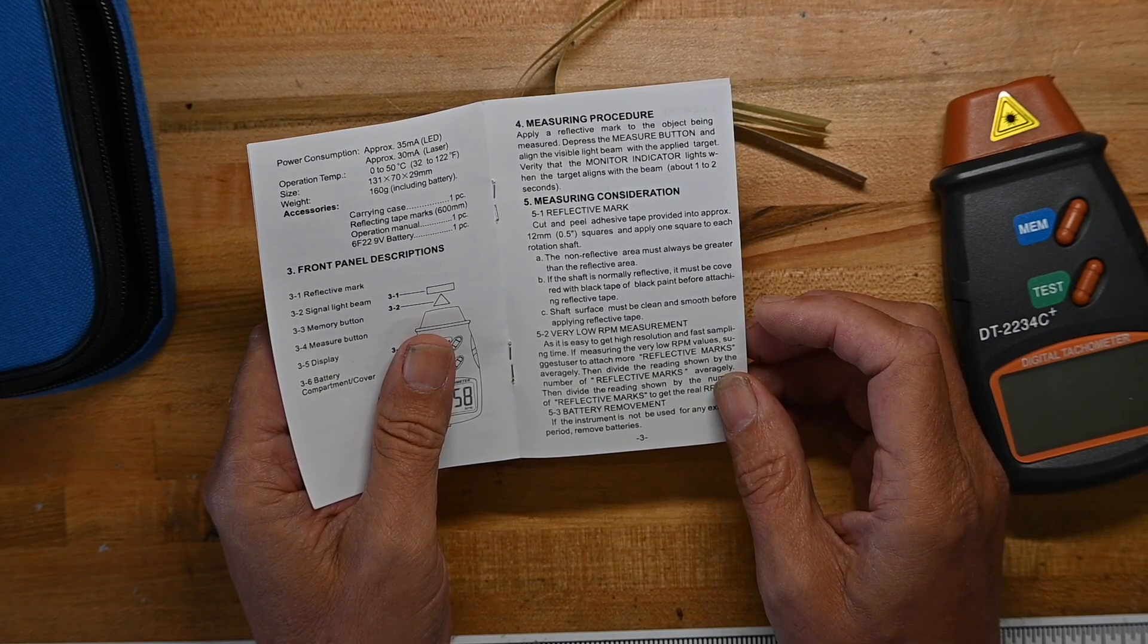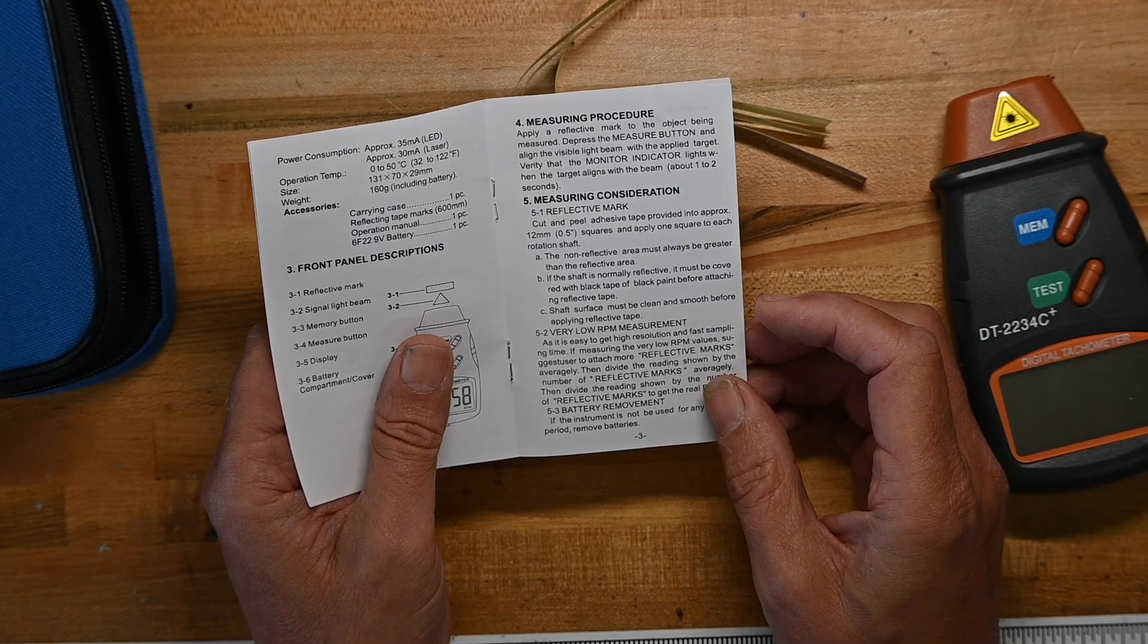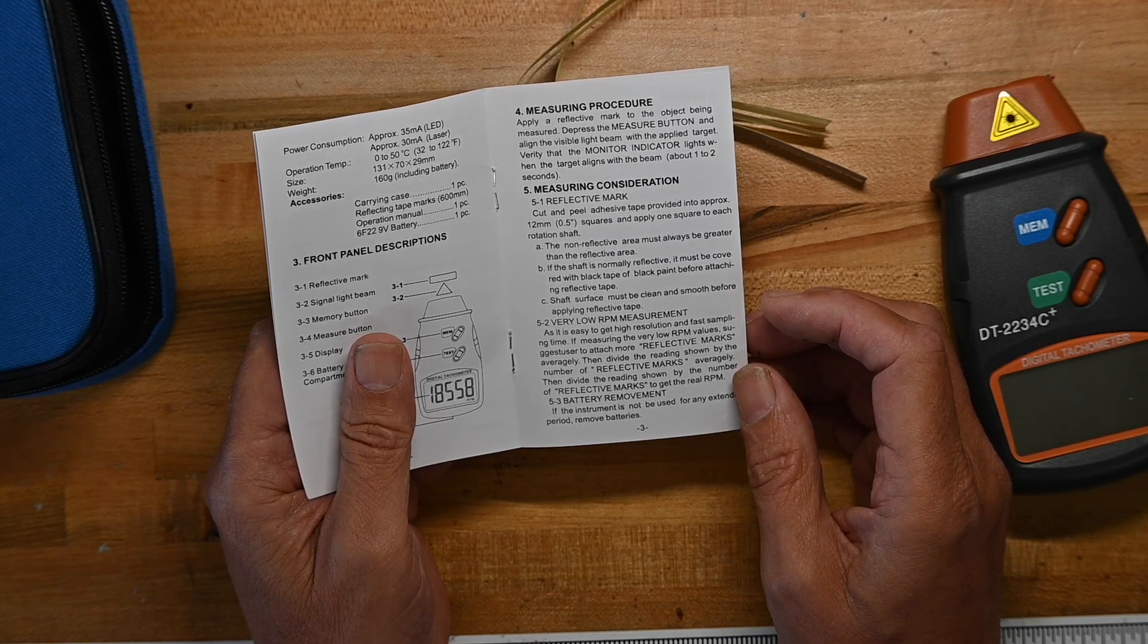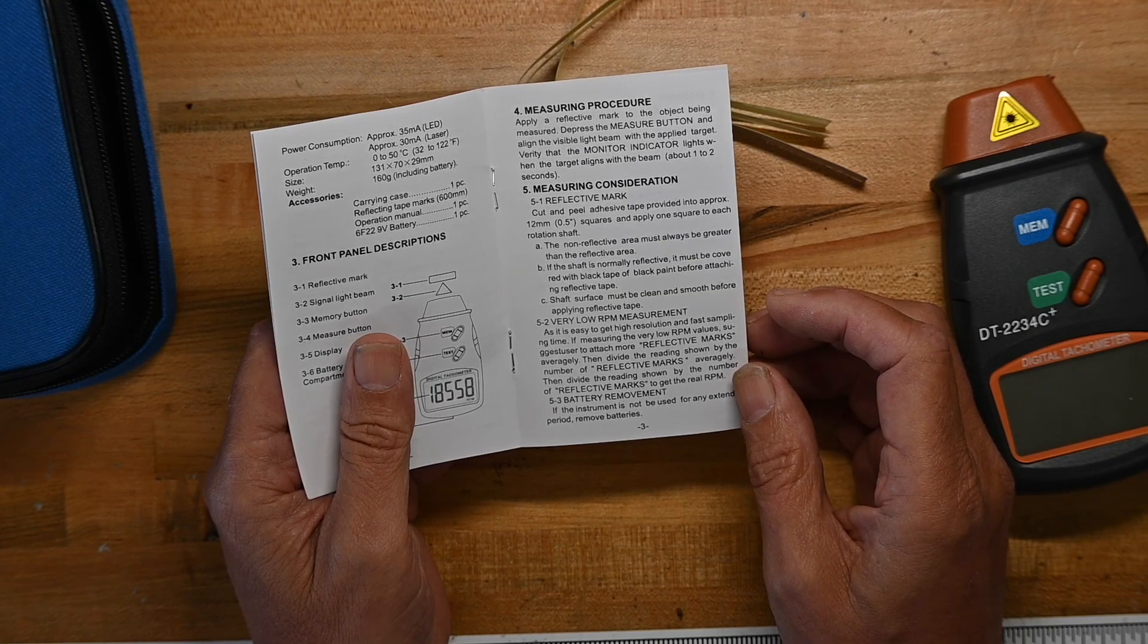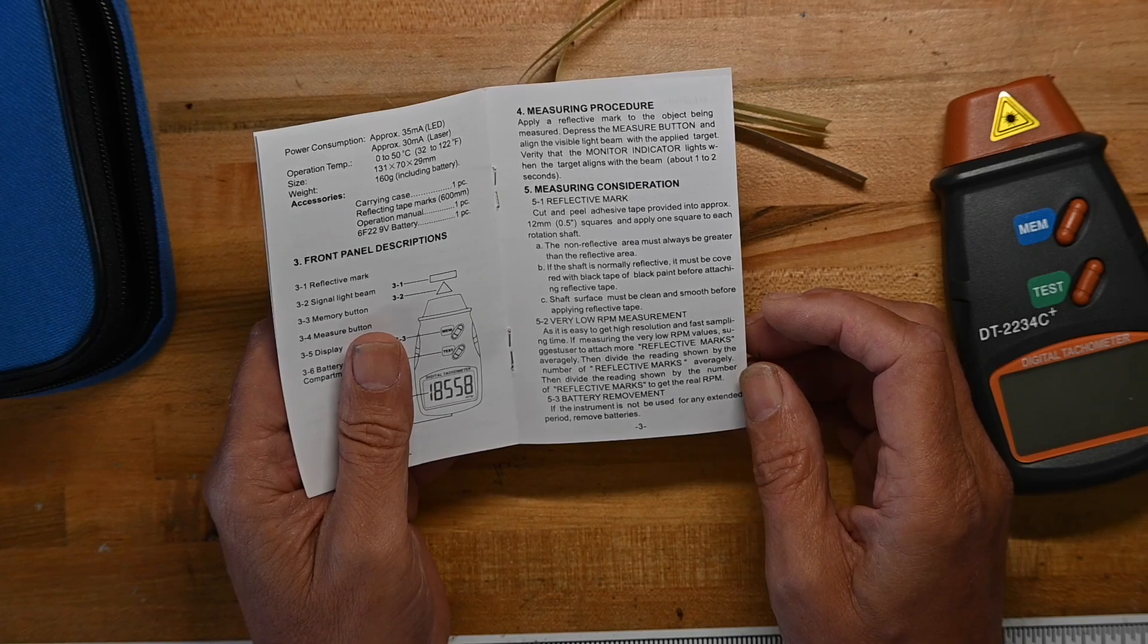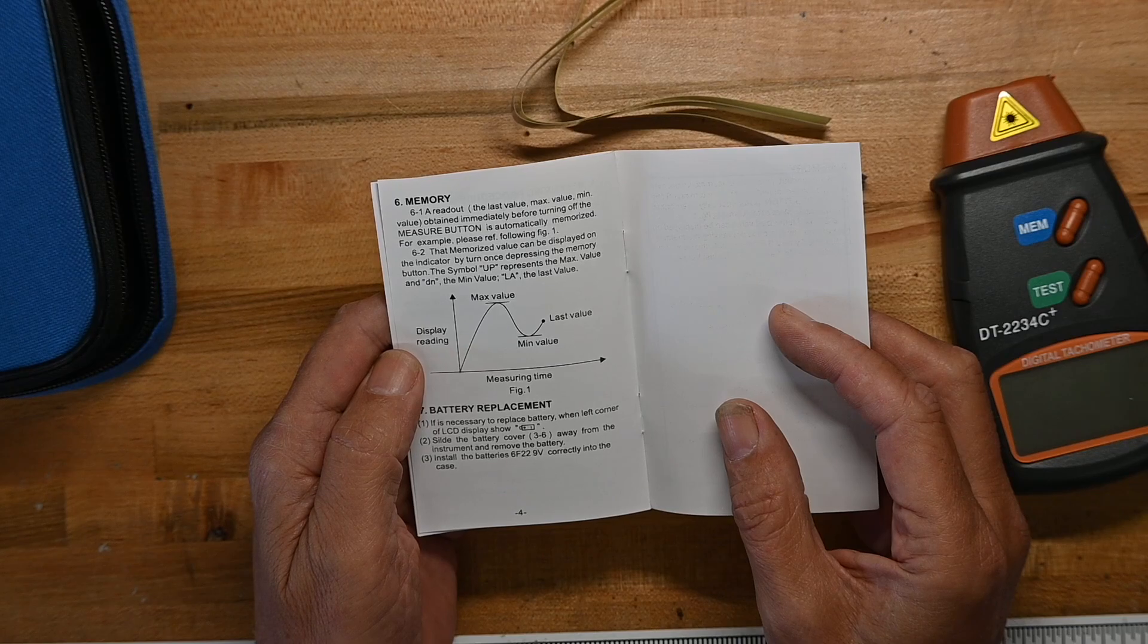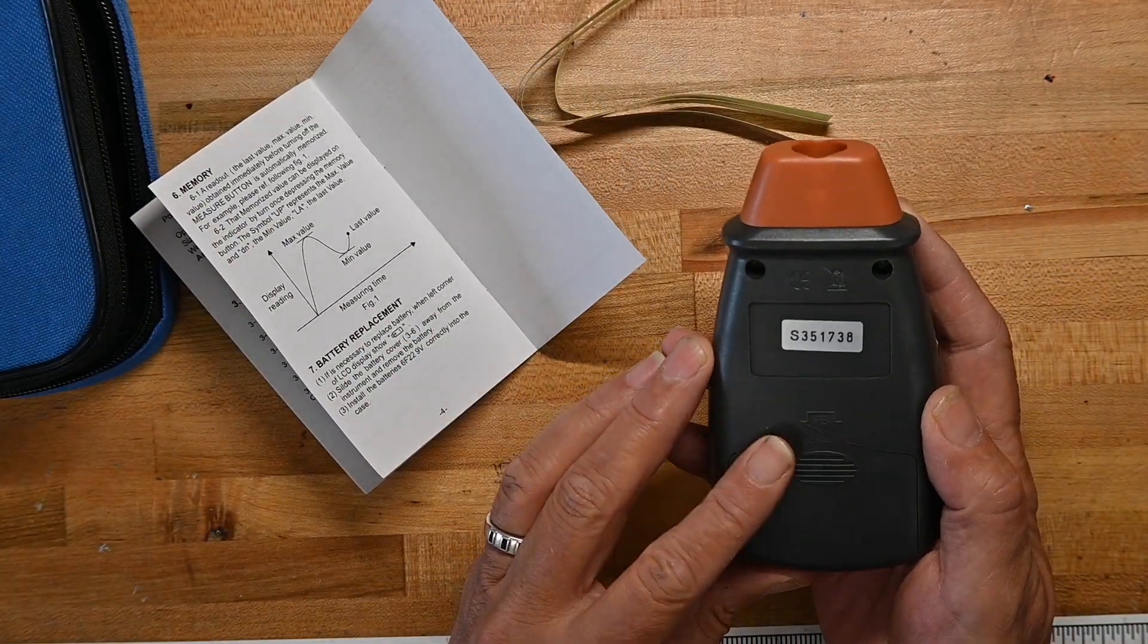Non-reflective area must always be greater than the reflective area. That makes sense. If the shaft is normally reflective, you have to cover it with black tape. Shaft surface must be clean. High resolution and fast sampling time - if the measure is a very low RPM value, suggest attach more marks than divide by the number of marks. Install the battery, 6F22 9V correctly in the case. Don't think that's true. I'm going to go get some batteries and put it in and we'll give it a whirl.